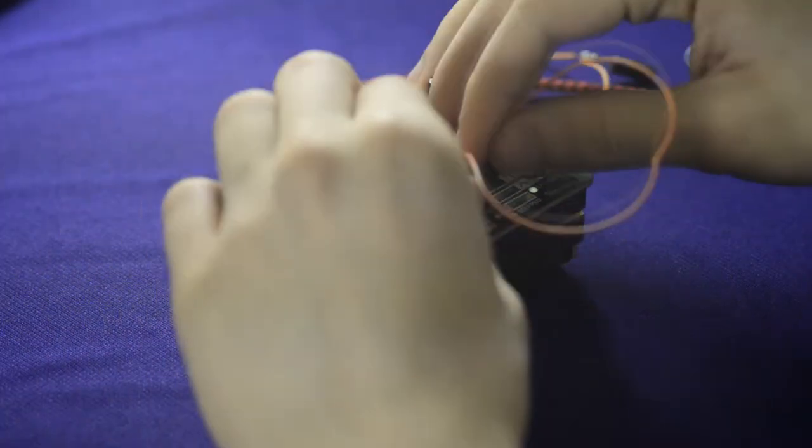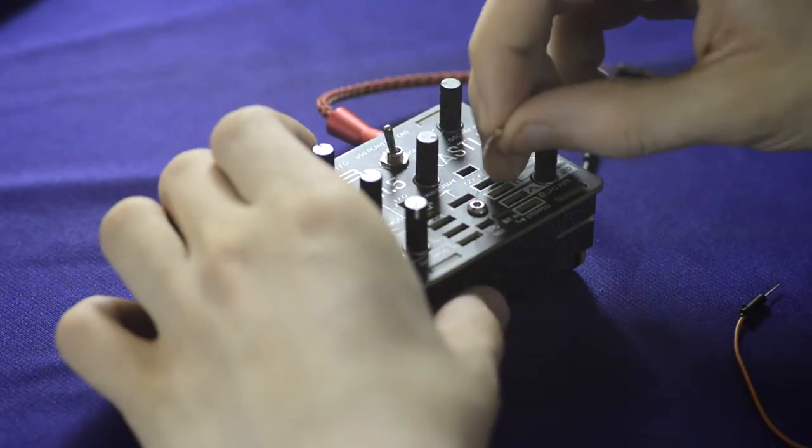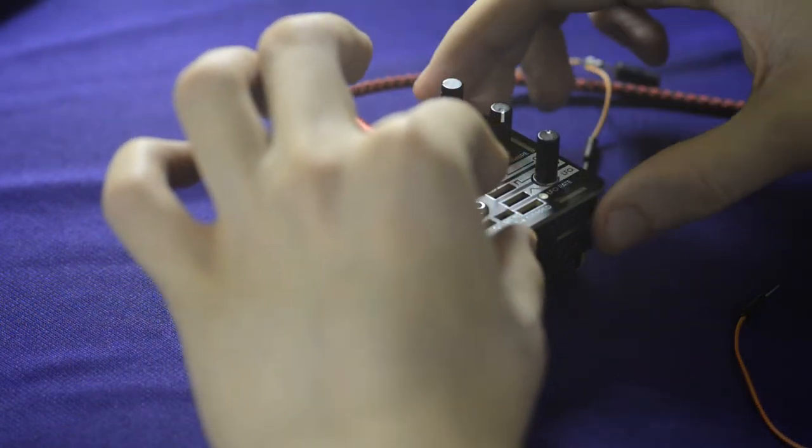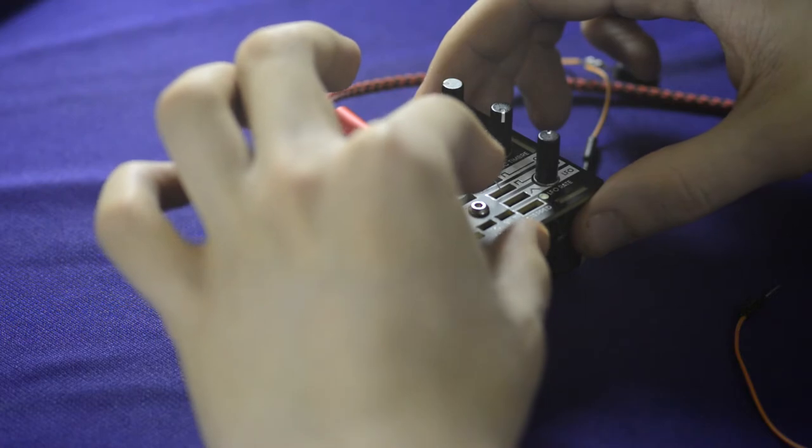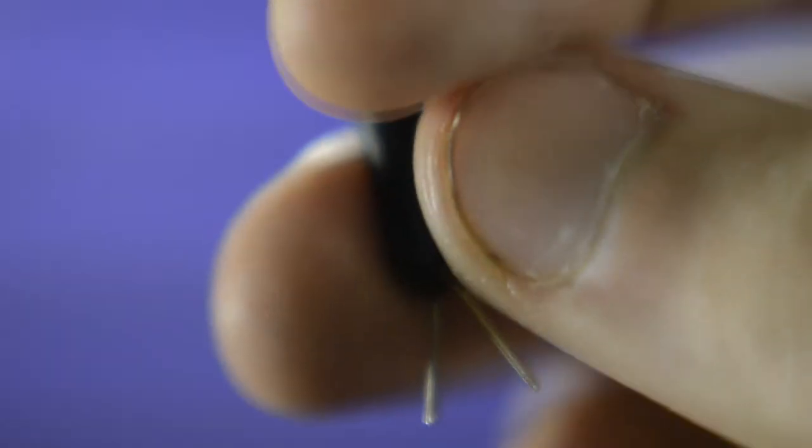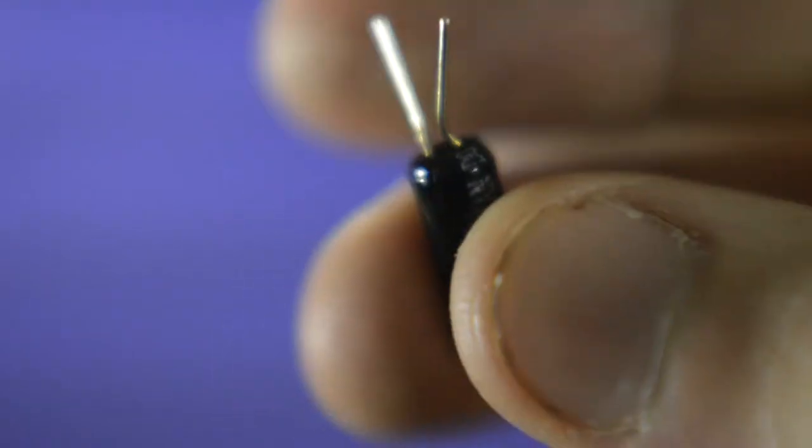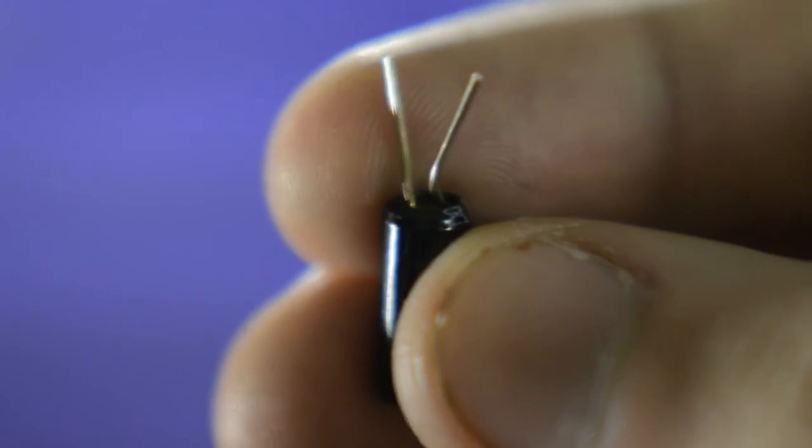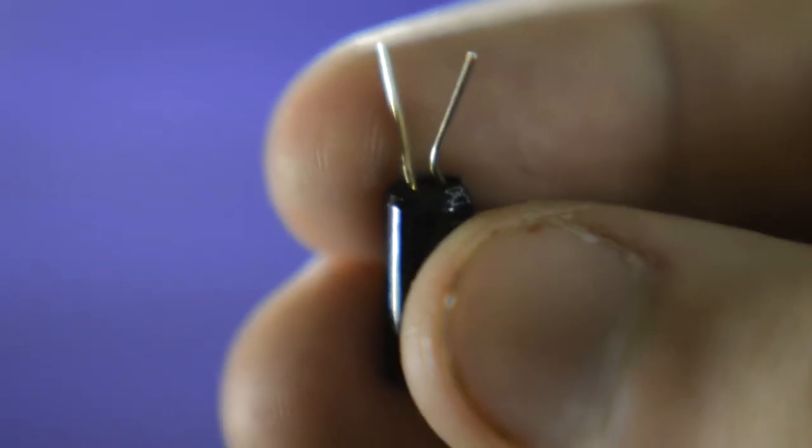Next up, one of the funnest and easiest components to use is the tilt switch. You can buy a 10-pack for a dollar on eBay, and they're super simple. When the switch is upright, a small metal ball connects the two leads together, turning the switch on.